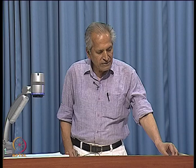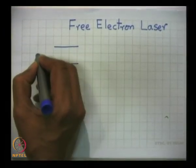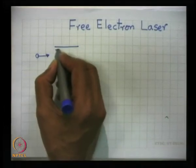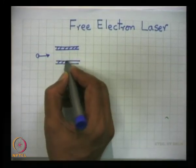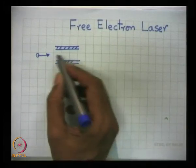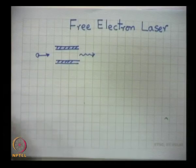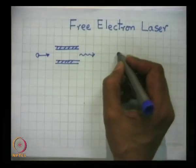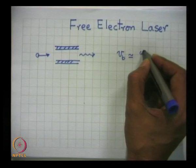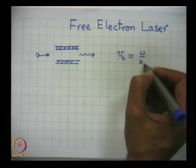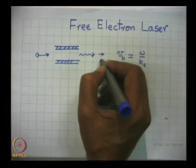The references for today's presentation are: a book by T.C. Marshall on free electron lasers; a book by Professor C.S. Liu and myself on interaction of electromagnetic waves with electron beams in plasmas; and another book on ultraviolet and soft x-ray free electron lasers by Schumser, Tolles and Rosberg.